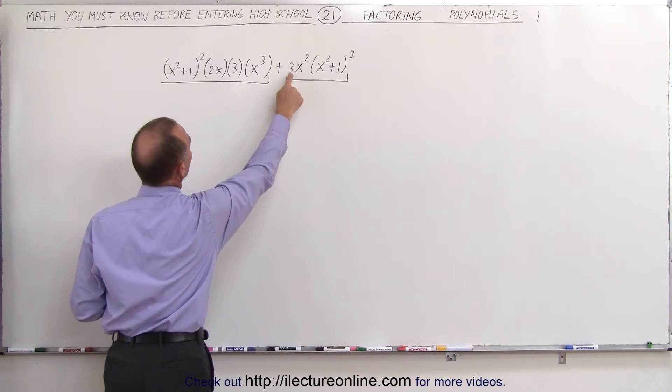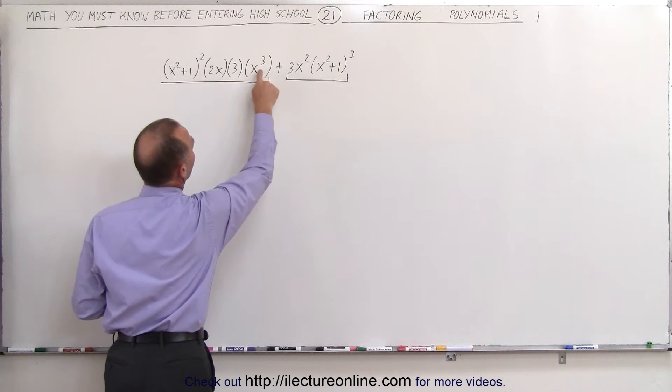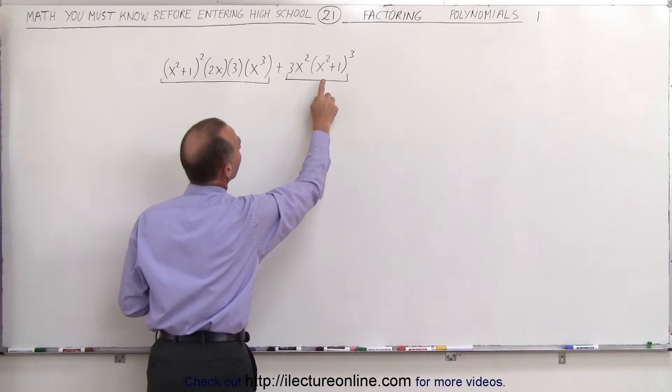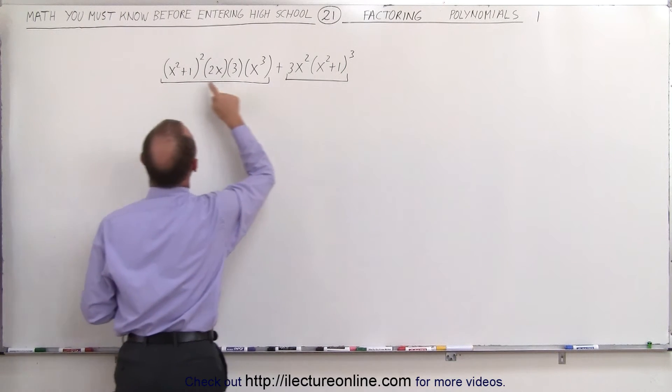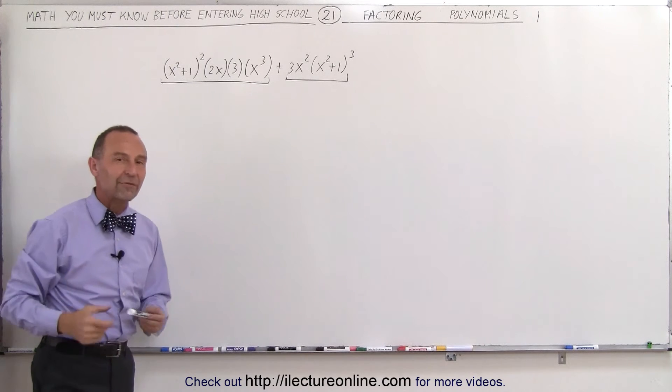Now I see a 3 here and I see a 3 here so that can be factored out. I see an x squared and x cubed so an x squared can be factored out, and then I see a quantity x squared plus 1 cubed and x squared plus 1 squared. X squared plus 1 squared can be factored out as well.